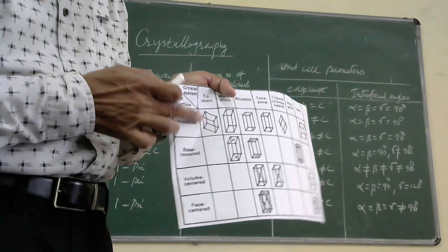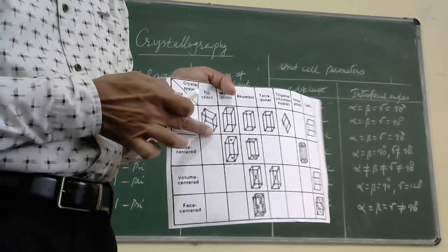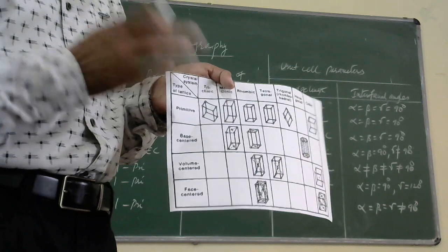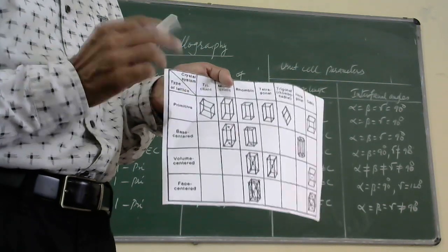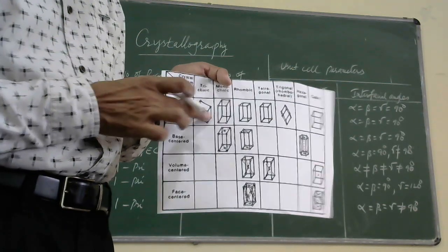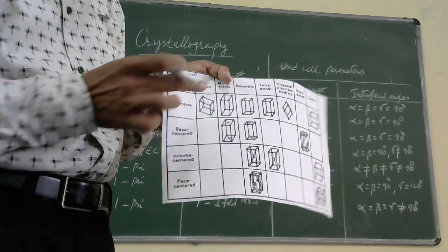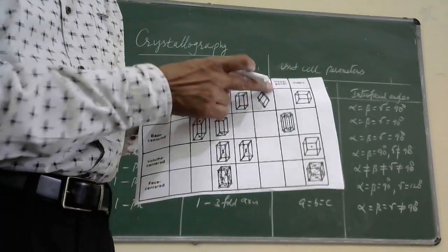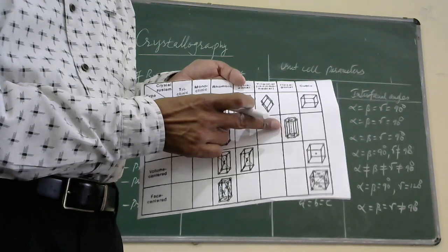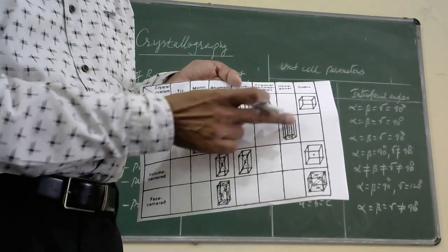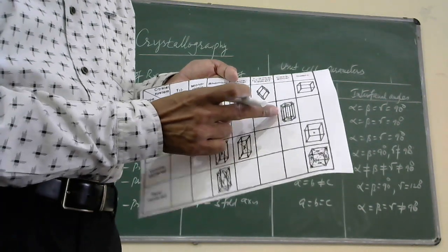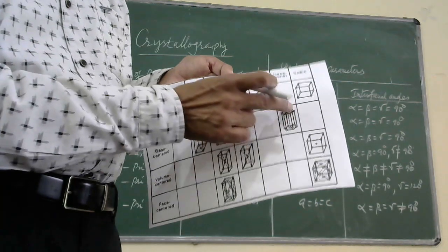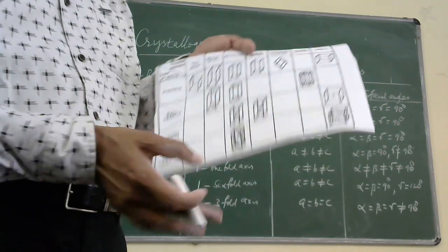In the triclinic system, all three sides are different and all three interfacial angles are different and not equal to 90 degrees, so particles are present only at the corners. In the hexagonal system, only one type of arrangement is possible, with particles present at the edges as well as at the face centers.